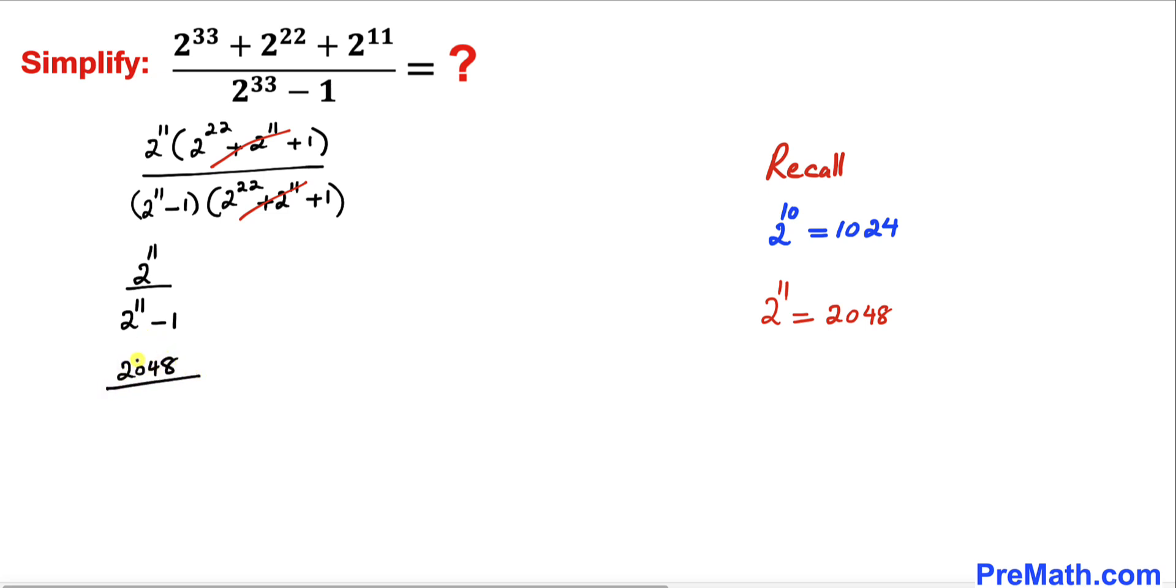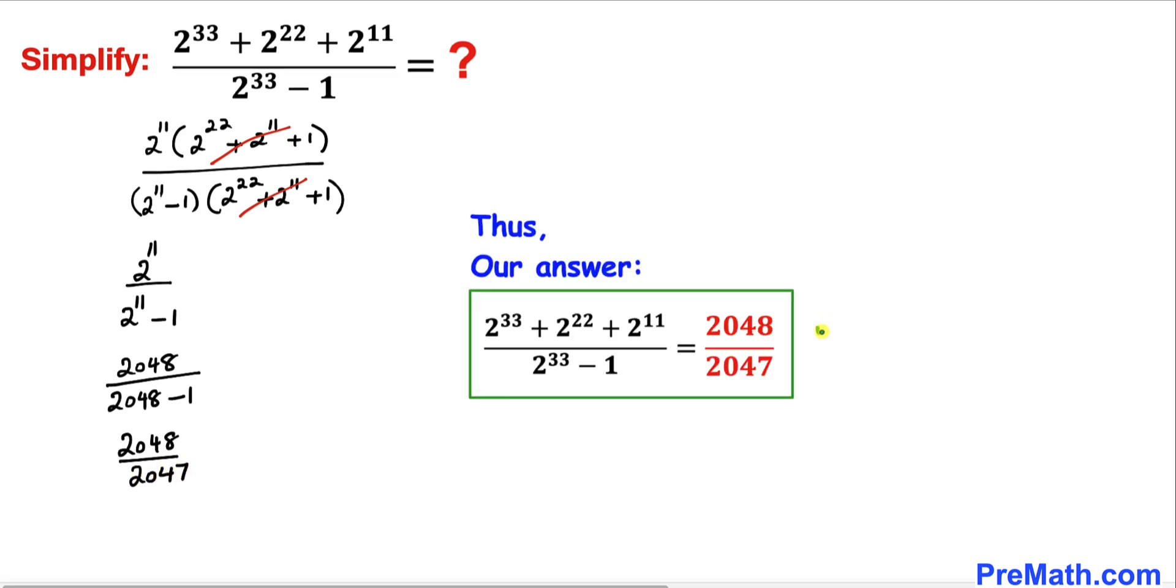And the denominator, this part is going to be 2048 minus 1, or simply that's going to give us 2048 divided by 2047. And here's our simplified answer.